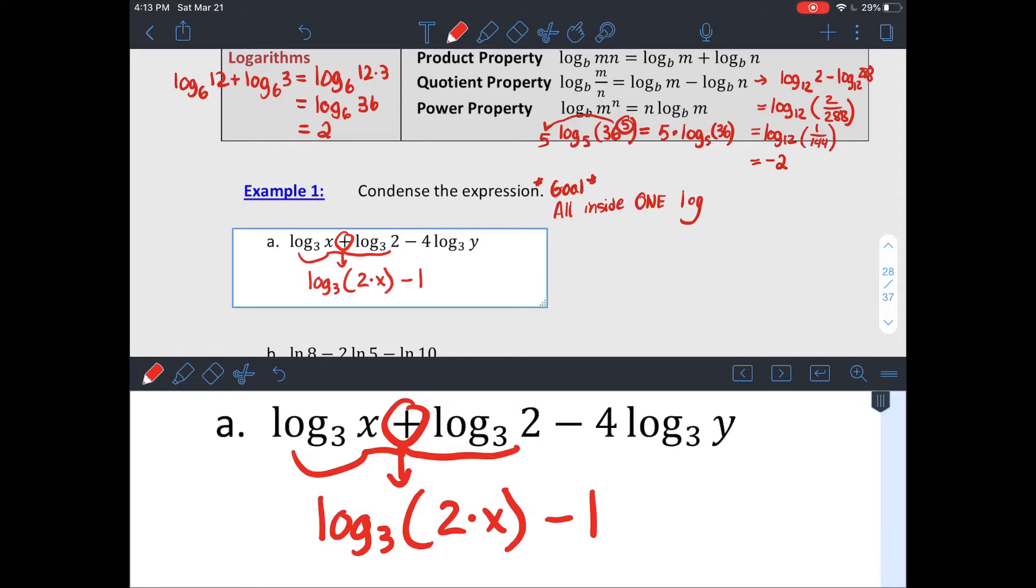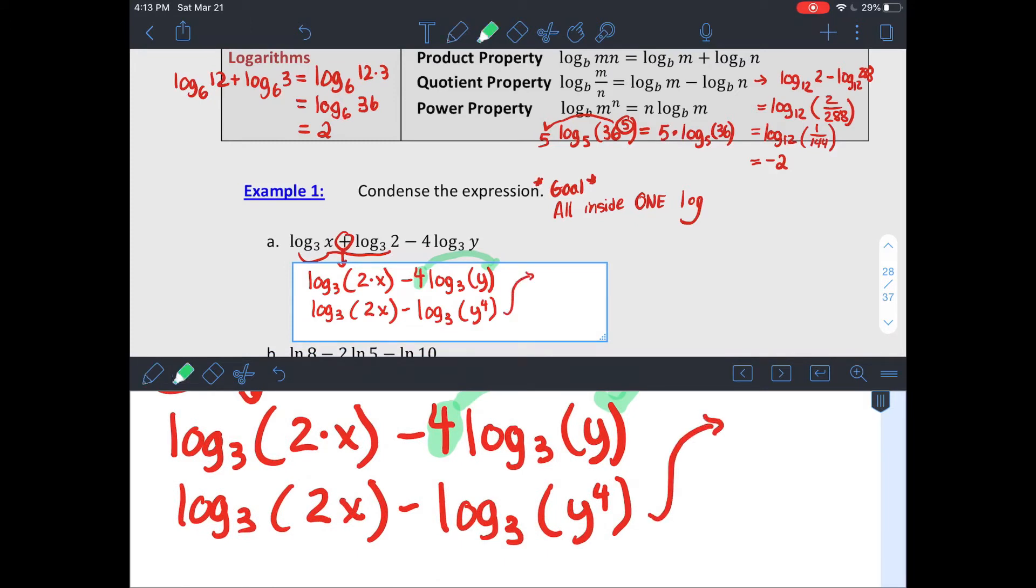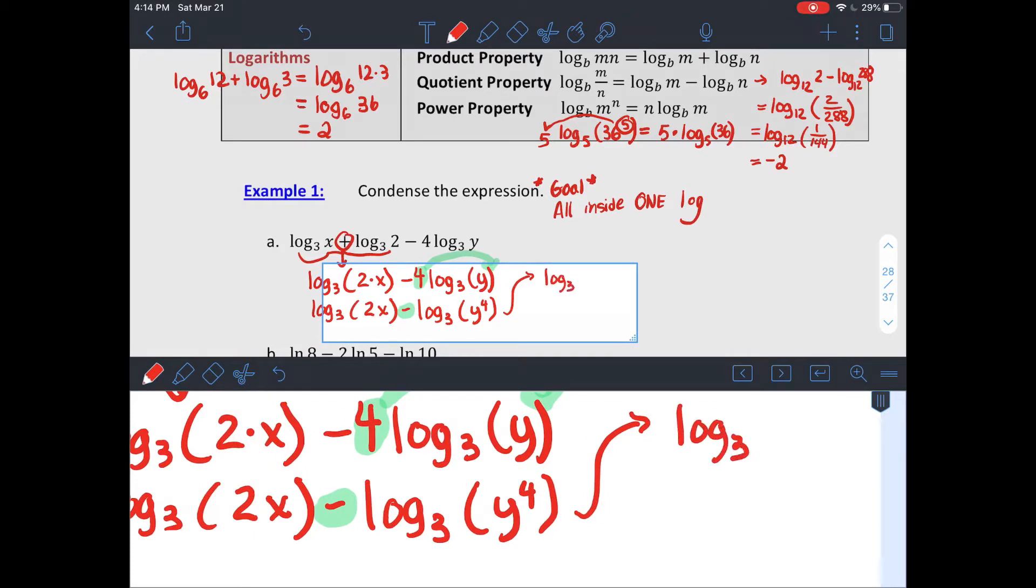So I did that log base 3 of y with my 4 out in front. I'm going to go backwards on that exponent property and bring that 4 inside and write this as log base 3 of y to the 4th. So that 4 out in front, I can put it back inside as an exponent. And then I have my two logarithms being subtracted. And my quotient property says two logs being subtracted, I can condense that back into log with those values being divided. So my final result is going to look like that.